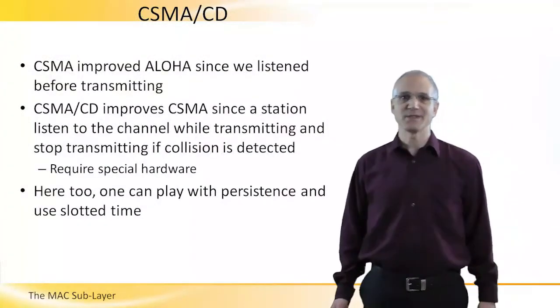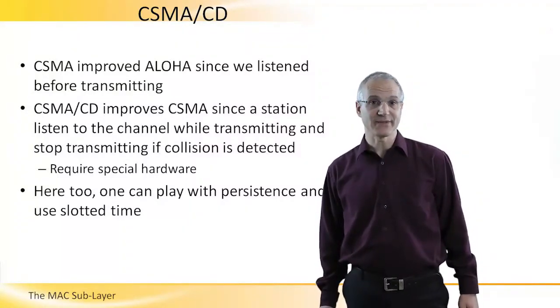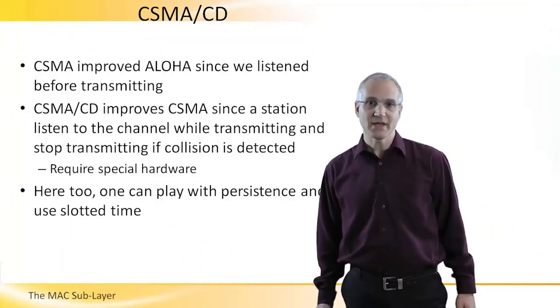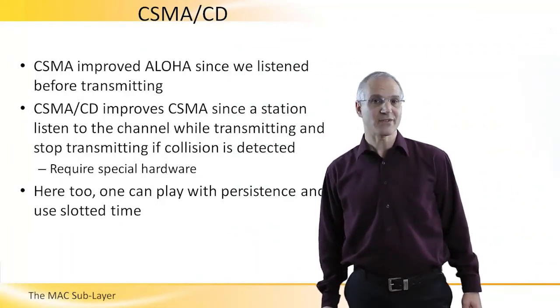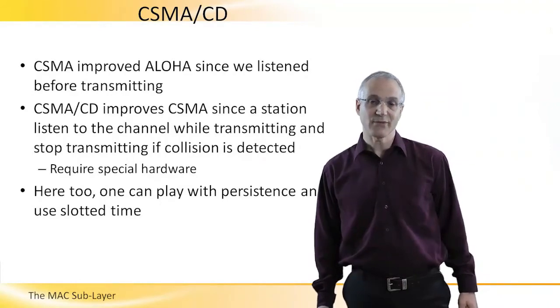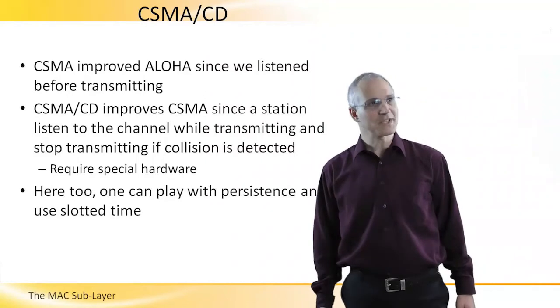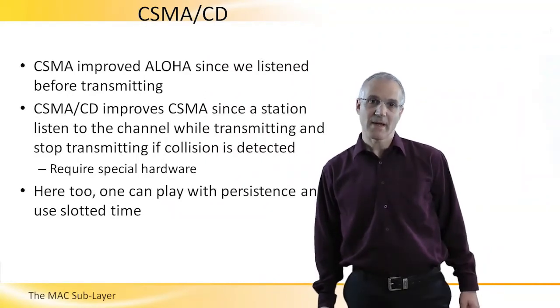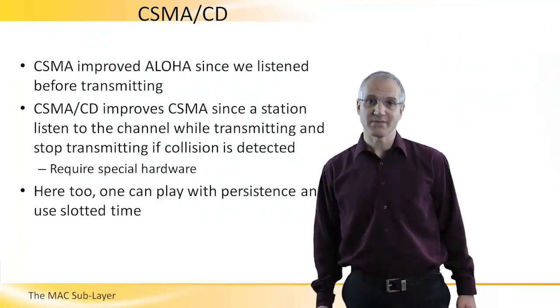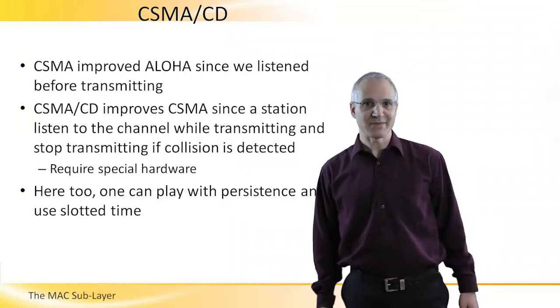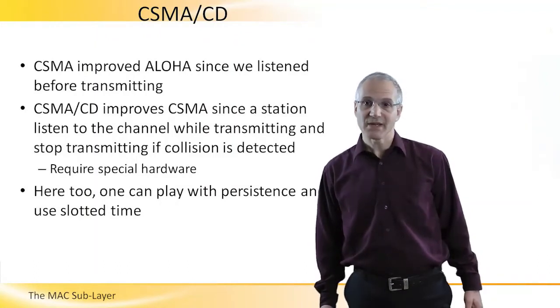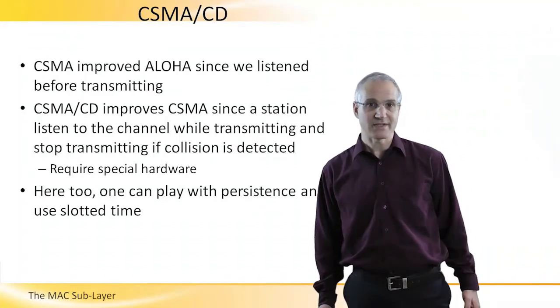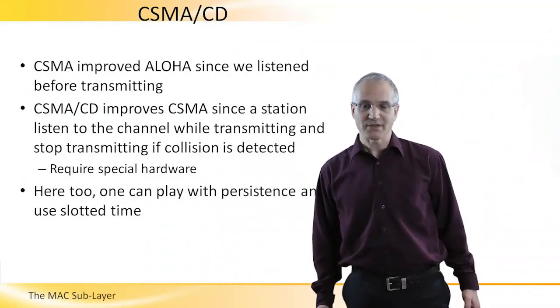So CSMA improves Aloha since we listen before transmitting. CSMA/CD, CD is for collision detection, improves CSMA since the station listens to the channel while it transmits and stops transmitting if it detects a collision. So we don't waste the entire frame length when a collision occurs. This requires special hardware that is not always implementable. So in some protocols, we use just CSMA. Due to commercial reasons, sometimes CSMA/CD is called CSMA/CA for collision avoidance. Here too, we can play with all kinds of persistent models like in CSMA and with slotted time to improve performance. But this is beyond the scope of this talk.